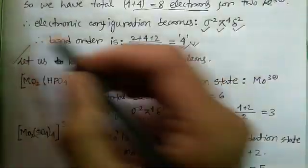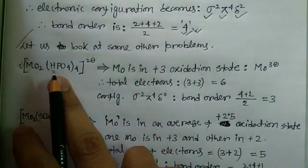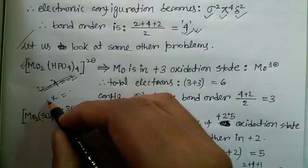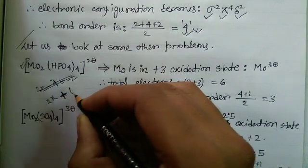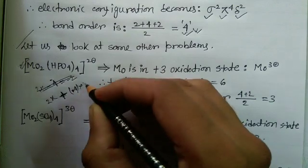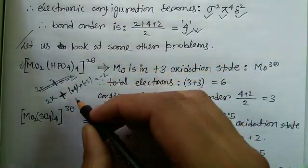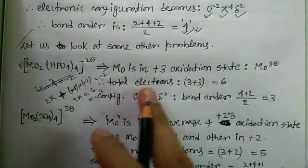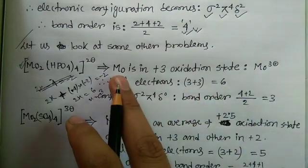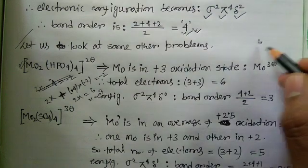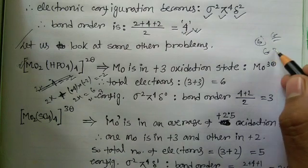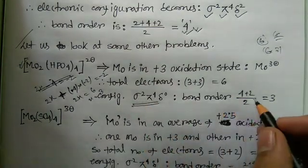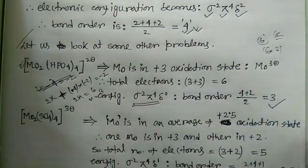Now let's look at another example with molybdenum with a hypophosphate-type ligand. The oxidation state calculation gives: 2x + 4(−2) = −2, so 2x = 6, x = +3. Molybdenum is in the chromium family with 6 outer electrons; at +3, each Mo³⁺ has 3 electrons, giving a total of 6 electrons. Filling gives σ²π⁴δ⁰, and bond order = (2 + 4) / 2 = 3. There is no delta bond in this case.